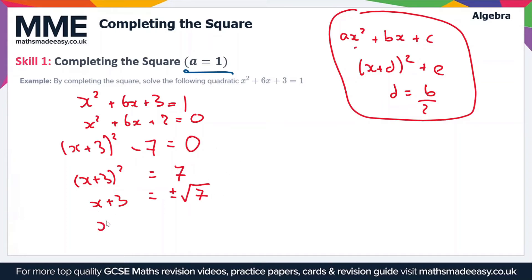Now all we do is subtract 3 from both sides, so we get ±√7 - 3 = x. These are our two solutions. If you want, you can write them out in full. Our solutions are x = √7 - 3 and x = -√7 - 3.